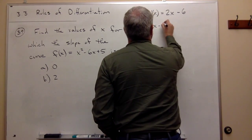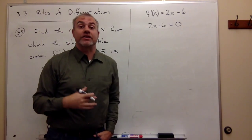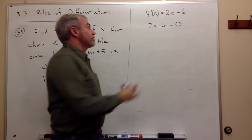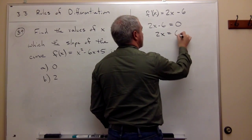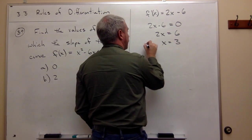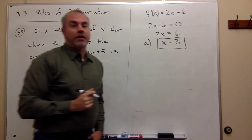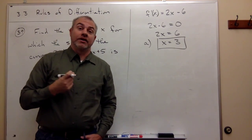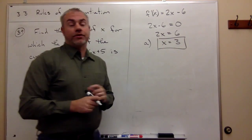I solve for x here, and I get that 2x would have to be 6, so x would have to be 3. So for part a, the only place where I would get a slope of 0 is when x is equal to 3.